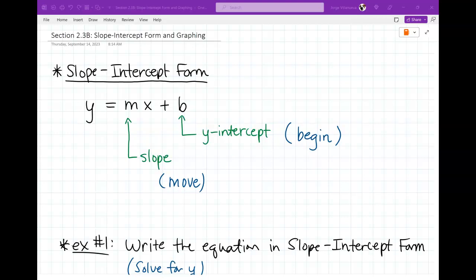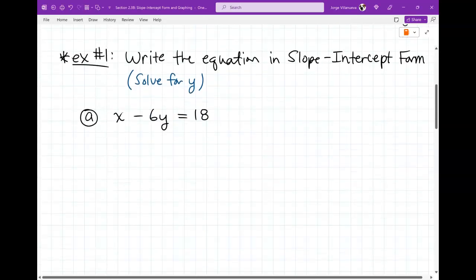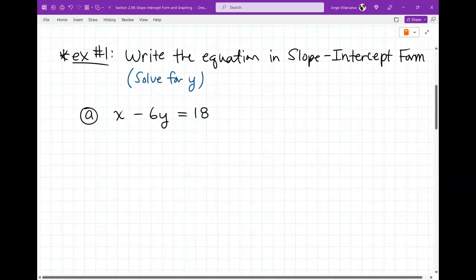So remember, b is for begin, m is for move. Their actual definitions are y-intercept and slope, respectively. So let's go ahead and do, we're going to do two examples, and that's it. Because these two examples are going to cover everything on your homework. I made them a little bit more progressive as we did it.